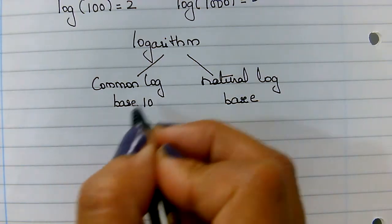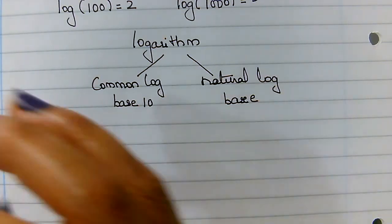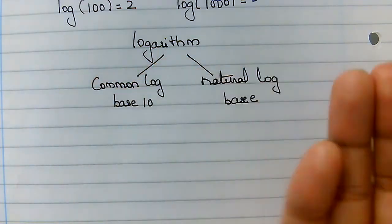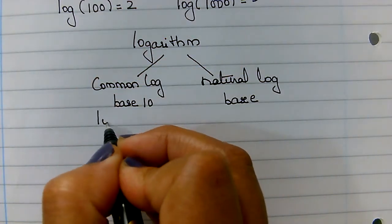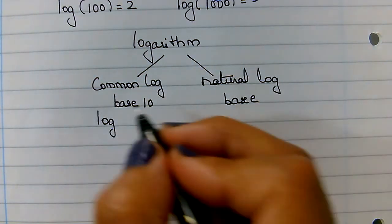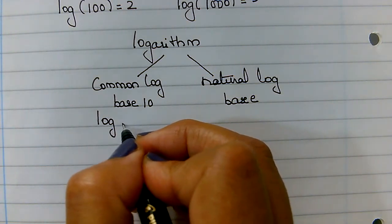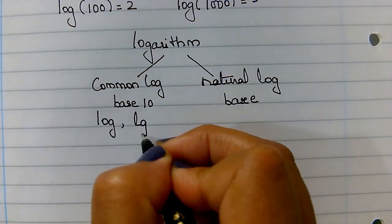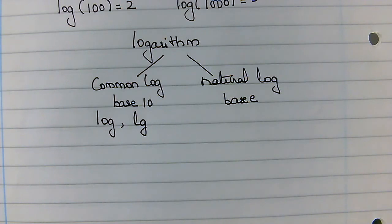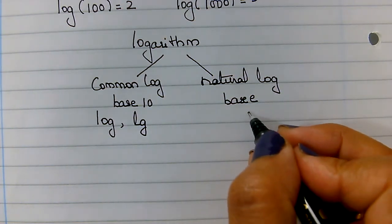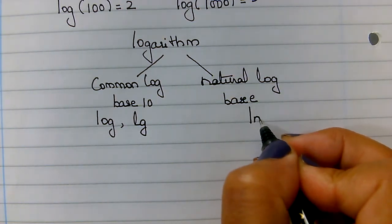Then how we represent common logarithm? It's not easy for us to always write common logarithm. So in your calculator, you will see it as log. Sometimes, in some questions, you will just see it as lg also. Natural log is ln.